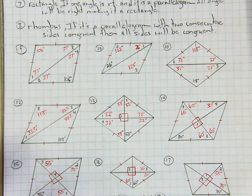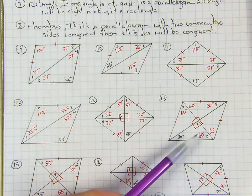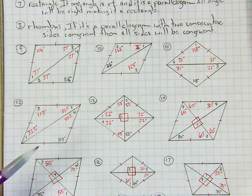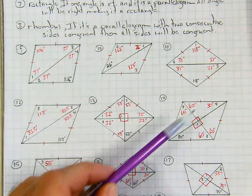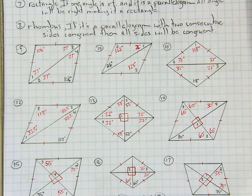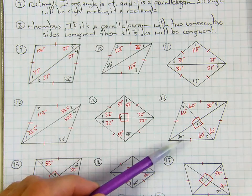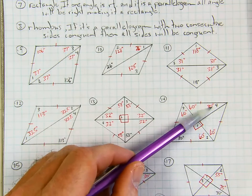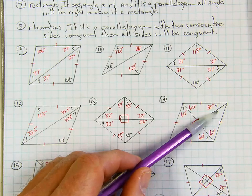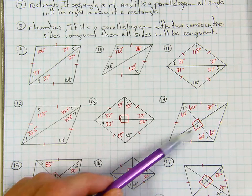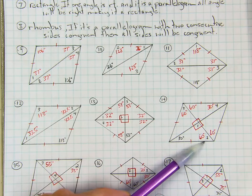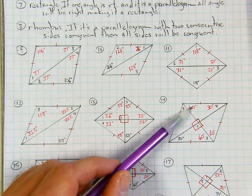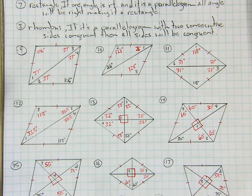Number 14: same thing, both diagonals drawn. Angle 1 is 90 degrees because all four of those angles are 90 degrees — we have four congruent right triangles. Since this angle is 30, angle 4 is 30, and the one next to it is 30. Then 90 and 30 from 180 is 60. So angle 2 is 60 and angle 3 is also 60.